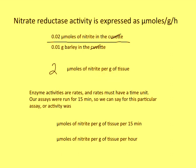We're getting close. We know how many micromoles per gram we had. The only other thing to consider is time, because enzyme activities are rates — product per unit time. Our assays were running for 15 minutes, so we got 2 micromoles of nitrite per gram per 15 minutes. But we want it per hour because that is the standard. If we extrapolate and assume the same activity over a full hour, we get 8 micromoles of nitrite per gram of tissue per hour. And that is what we wanted to know — we're all done.